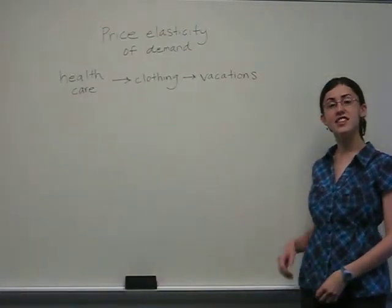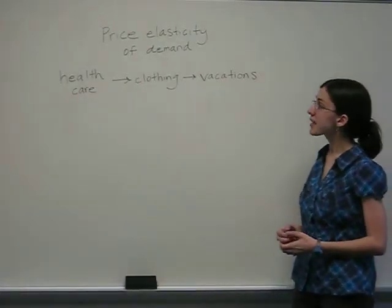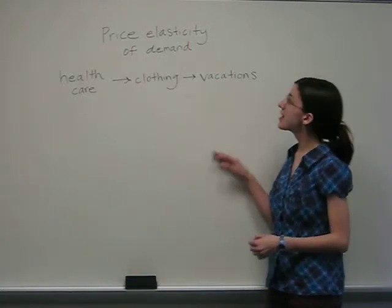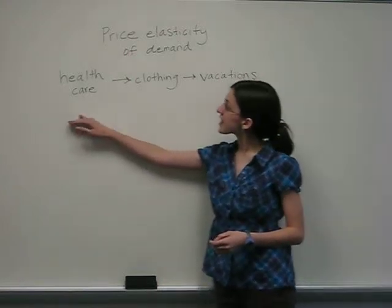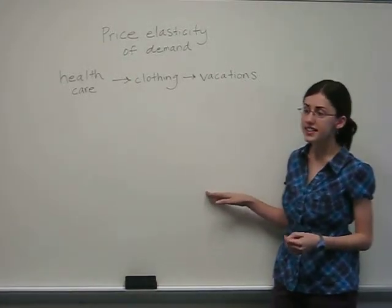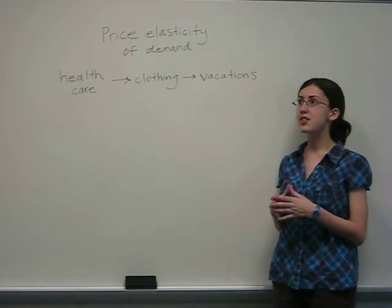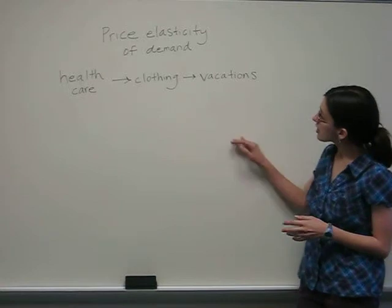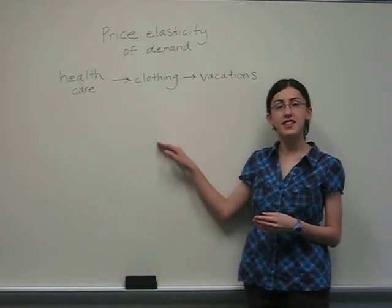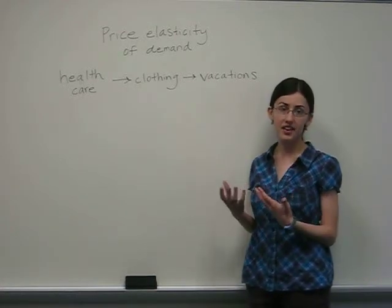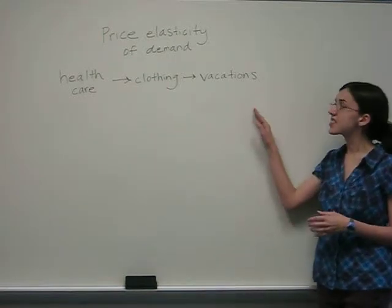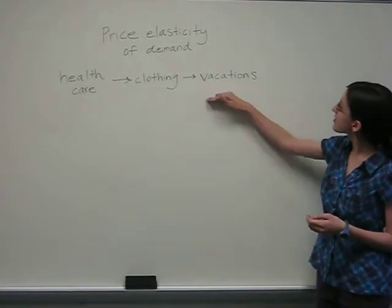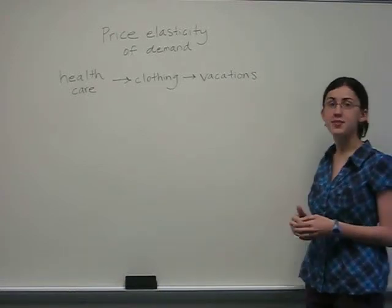To understand these different types of elasticity, it can be helpful to look at examples along a spectrum. For price elasticity of demand, health care is inelastic because it is a necessity, so no matter how much the price changes, people will still need to buy it. Clothing is more in the middle because it is an everyday item but not perishable. Vacations are a luxury that can easily be cut from one's budget if the price were to increase by a large amount.